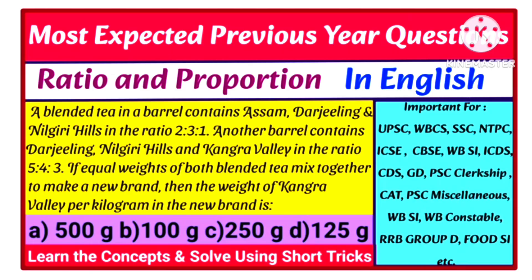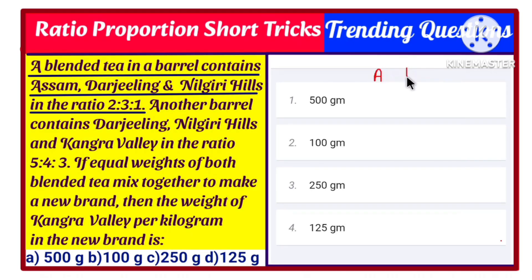Here it is given: a blended tea in a barrel contains Assam, Darjeeling and Nilgiri hill in the ratio 2:3:1. The mixture ratio of Assam, Darjeeling and Nilgiri hill tea is given. Let us assume Assam to be A, Darjeeling to be D, and Nilgiri to be N. So the ratio is 2:3:1.